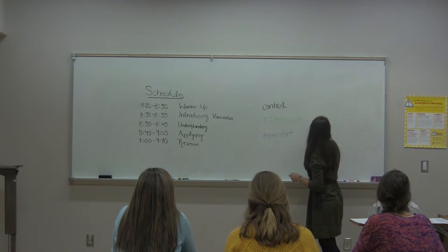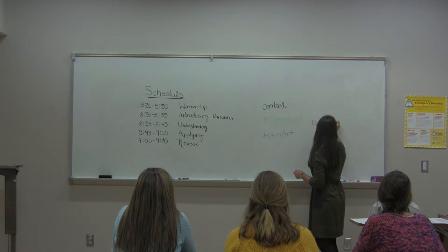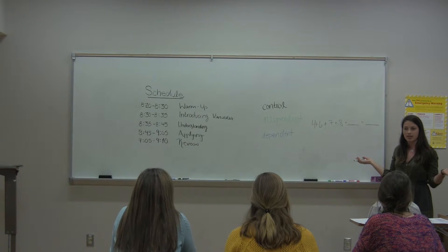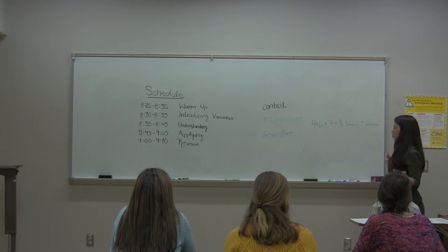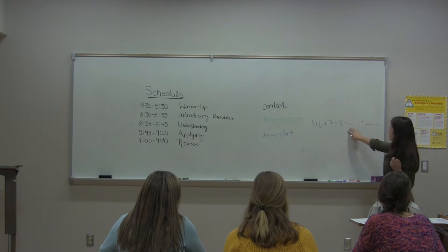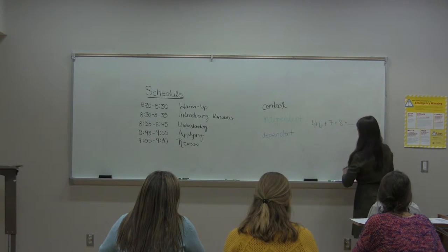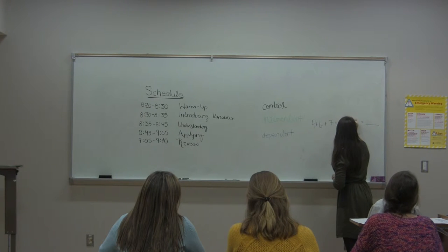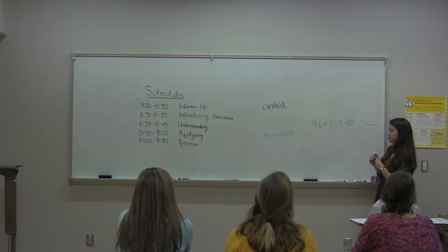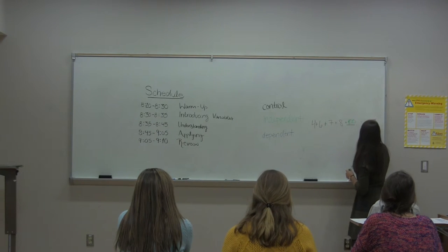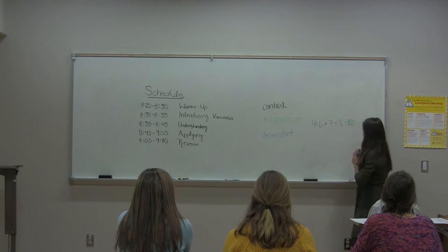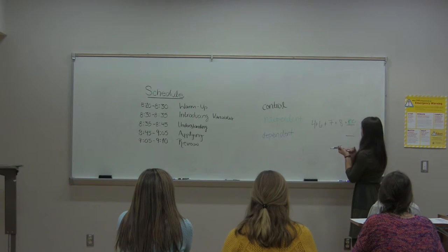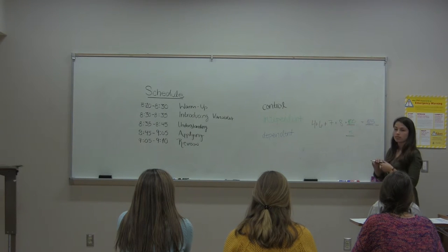I'm going to write a math problem on the board, and I want you all to tell me what the answer to the problem is. Does anybody know the answer? We're missing a number — we need a number in order to find the answer. Someone give me a number to fill in the blank. A hundred? That's a good number. If I add a hundred to these four numbers, I get a hundred and twenty-five. Now give me a different number — five. If I add five in, then the answer is thirty.